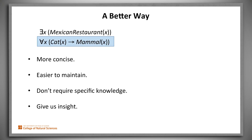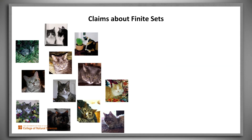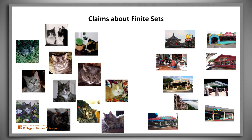Consider the claim that all cats are mammals. That's part of a larger set of claims about the animal kingdom. By definition of the categories, it isn't possible to be a cat and not be a mammal. Of course, there's a finite number of cats and of restaurants, so in those cases at least it's possible to make our claim without the quantifiers.